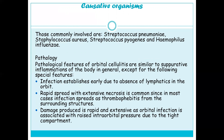The pathological features of orbital cellulitis are similar to suppurative inflammations of the body in general, except for special features: infection establishes early due to the absence of lymphatics in the orbit; rapid spread with extensive necrosis is common since infection spreads as thrombophlebitis from surrounding structures; and damage is rapid and extensive due to raised intraorbital pressure from the tight orbital compartment.